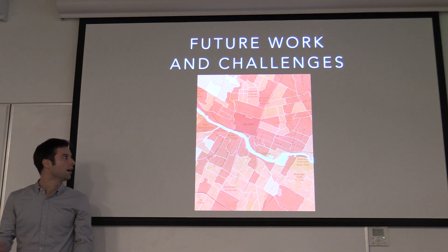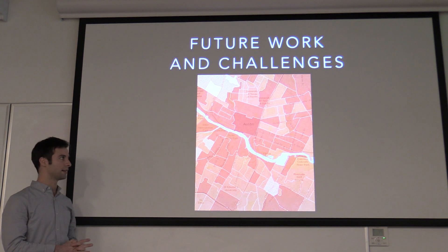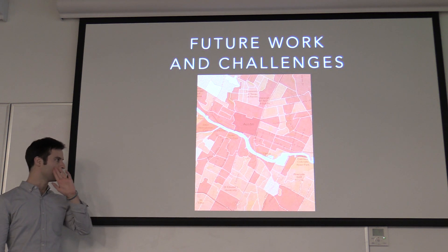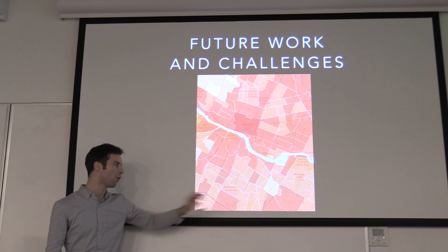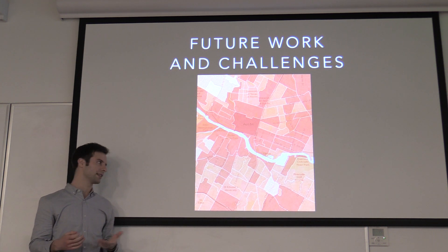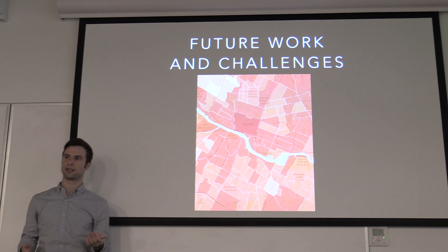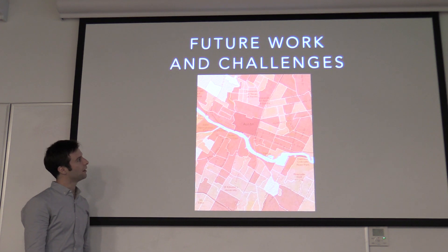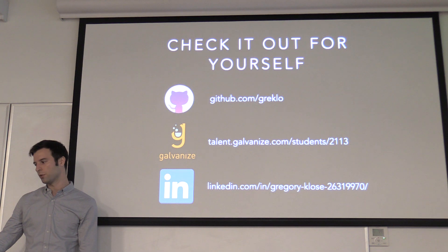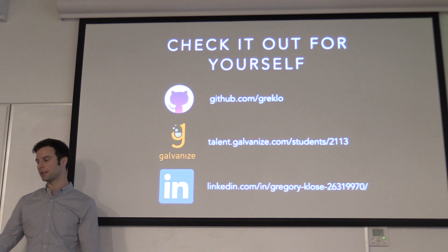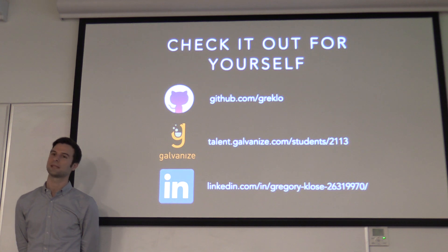Some future work I'd like to do is work with the city of Austin to get more precise incident data. The city didn't give me specific points on a map where an incident occurred — they gave me census block information, because this data is highly sensitive. If I had a person's address and knew the disposition of the call, I could conceivably figure out the identity of that person, and the city obviously doesn't want to release that information. That's my project — if you're interested, feel free to check out my GitHub, my Galvanize talent profile, or contact me on LinkedIn. Thank you.